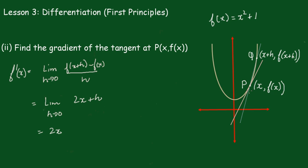If you recall from the previous part, x was 2. When we estimated the gradient of the tangent, we found it was 4.